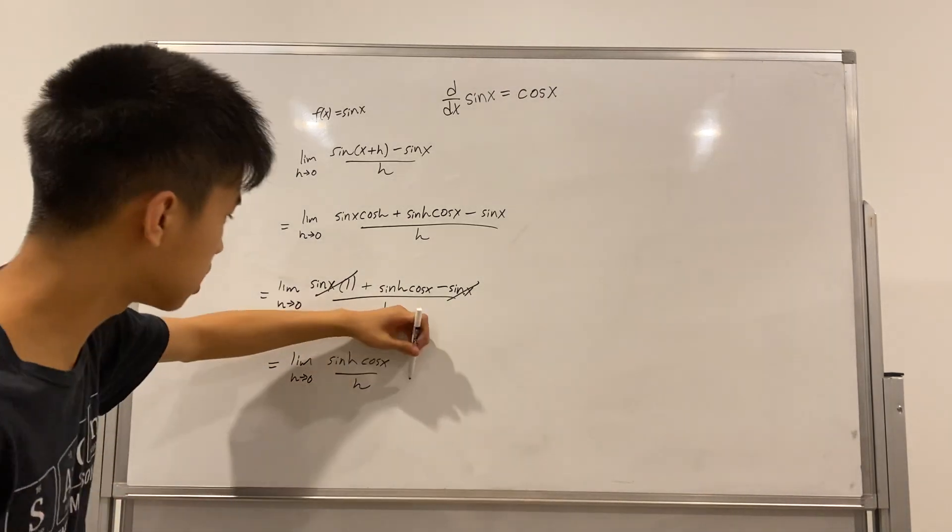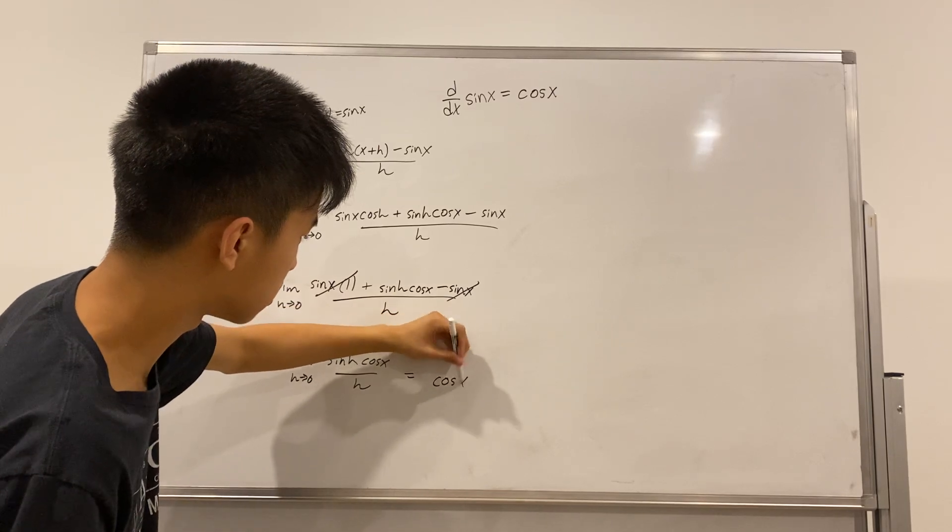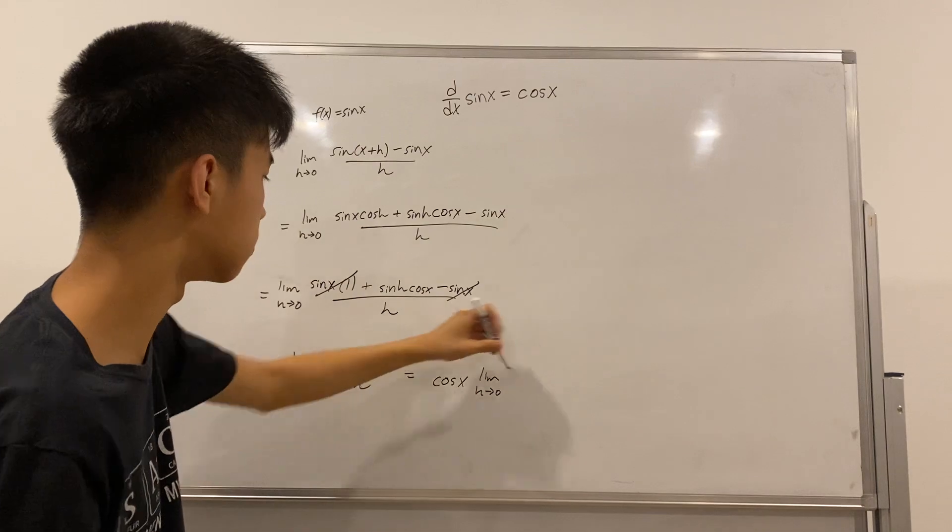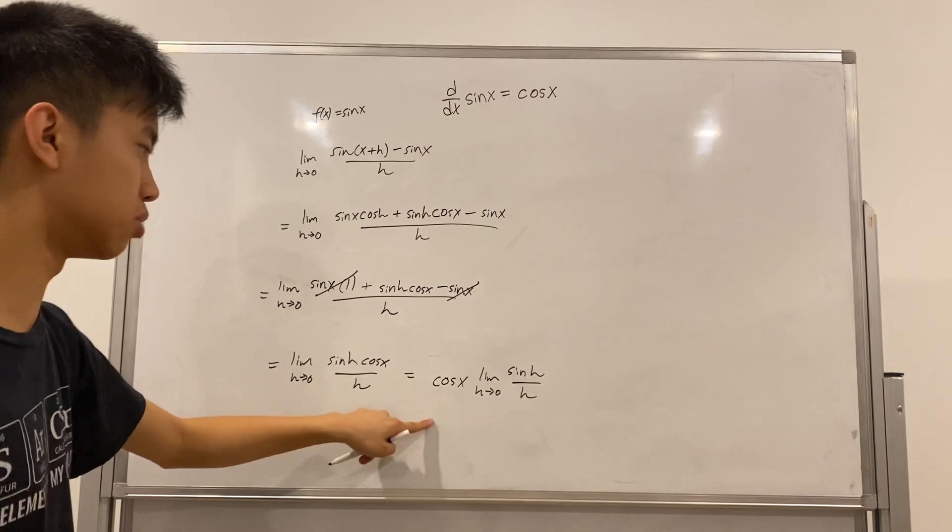Now, we basically have cosine of x times the limit h goes to 0 of sine h over h. Now, how do we go about doing this?